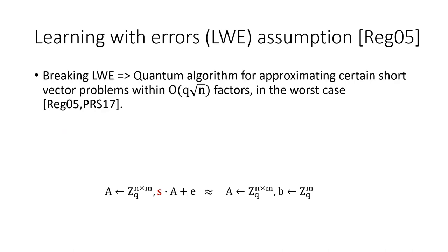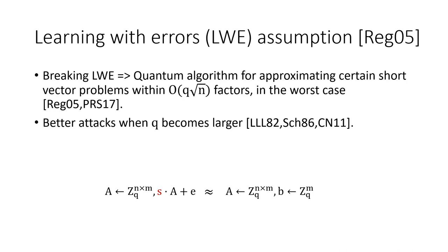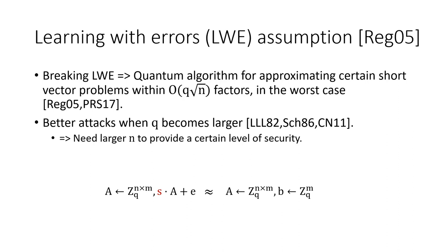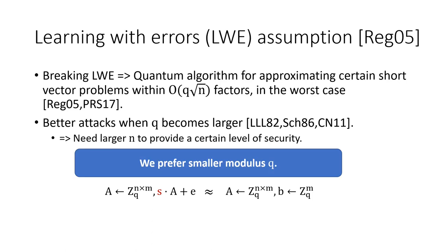It has been shown that breaking LWE implies a quantum algorithm for approximating certain short vector problems on integer lattices within a q·√n approximation factor. If q becomes larger, the approximation factor becomes looser and less desirable, and we also get better attacks, meaning we need a larger dimension n to achieve the same security level. Larger n and larger q both lead to larger key sizes and public parameter sizes, so we prefer a smaller modulus q.